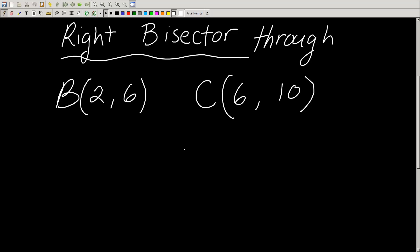Alrighty, in our last video we talked about the equation of the median, and now we talk about the equation of the right bisector. Now the right bisector is a line that bisects another line segment.